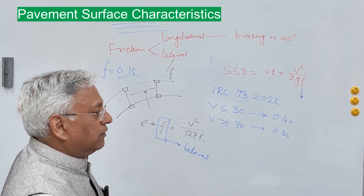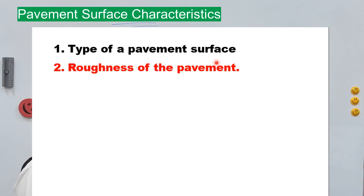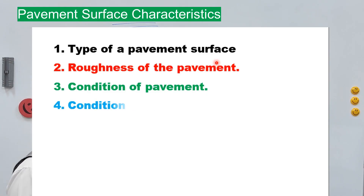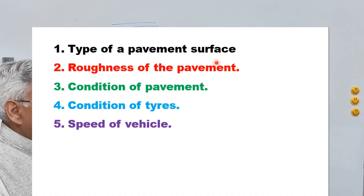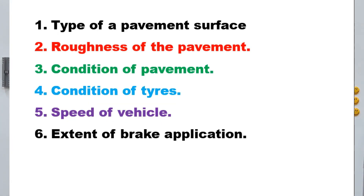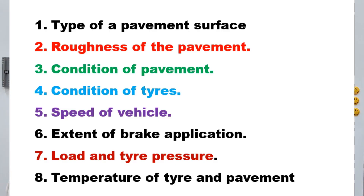Friction depends upon several factors: the type of pavement surface (concrete or bituminous), the roughness or texture of the surface, condition of the pavement (dry or wet), condition of the tire (new tires with good tread vs. old worn-out tires), speed of the vehicle, extent of braking force applied (partial or full braking), wheel load, tire pressure, and temperature of the tire and pavement. On a dry surface, the coefficient of friction of old tires is greater than new tires.